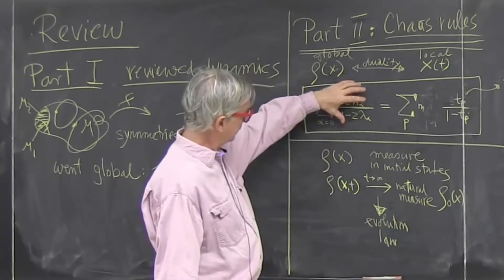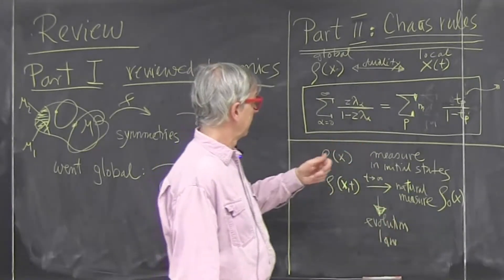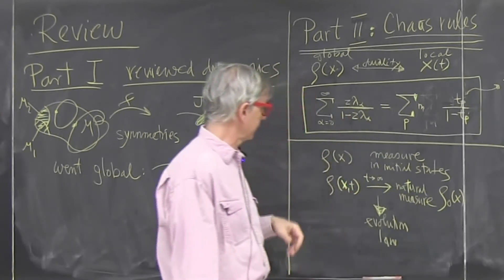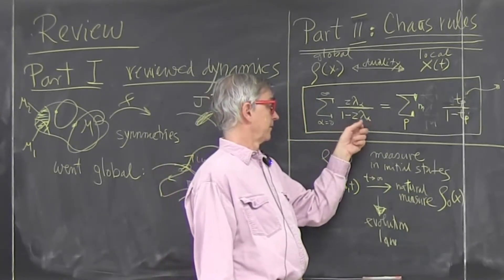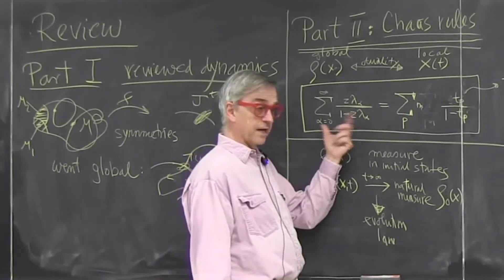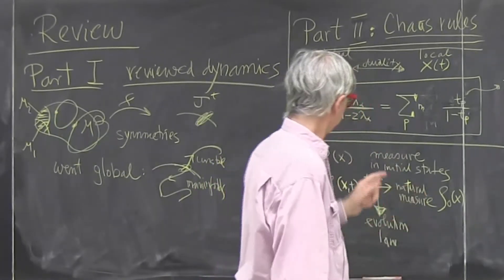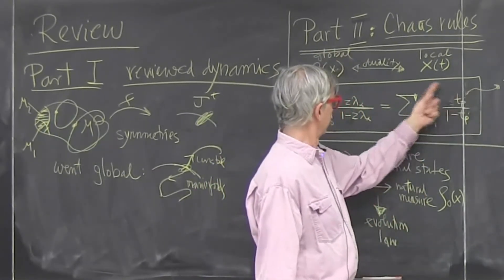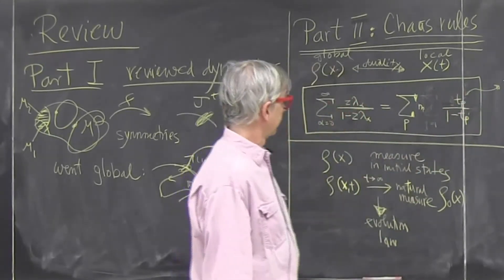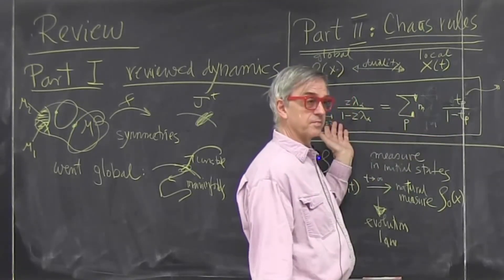So understanding the spectrum of the evolution operator will tell you what can happen. Now evolution operators are designed to be differential equations or finite maps, finite time maps. So they're always designed to be short time, whereas all the stuff on the right-hand side is to arbitrary length. And we will be able to use this information to compute that. It's kind of pretty amazing.